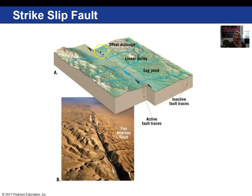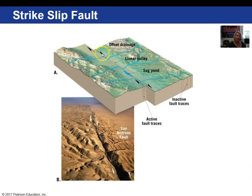Here's an image where you can see the shear stress — these two blocks are sliding past each other. We stand on one side of the fault, look across to the other side. Do the streams appear to have been shifted right or left? Hopefully you say right, so we would say that this is a right lateral strike-slip fault. The San Andreas, shown in this bottom picture, is a right lateral strike-slip fault.